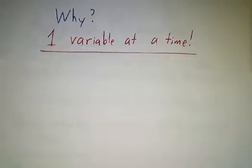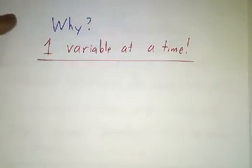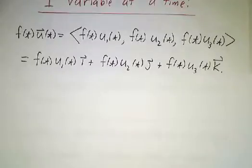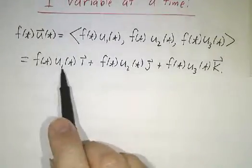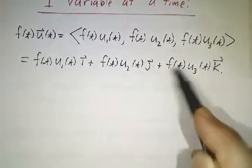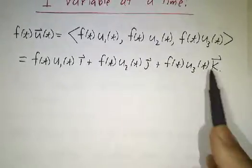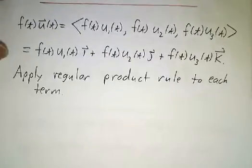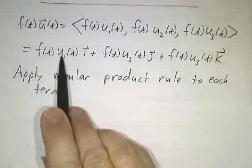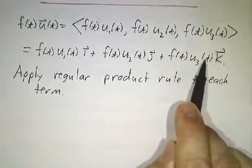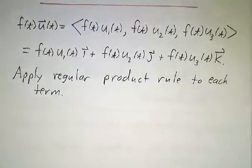To see why these rules work, we just do our calculations one variable at a time. For example, if you have f(t) u(t), that's f(t)u₁ times i, plus f(t)u₂ times j, plus f(t)u₃ times k. If we take the derivative of each of those, we just apply the regular product rule to each component and collect terms, and we're done.